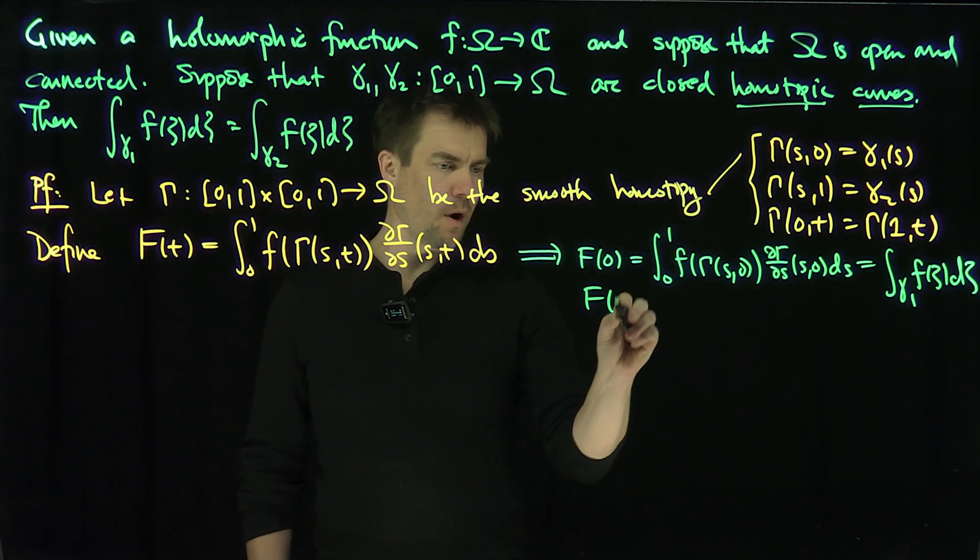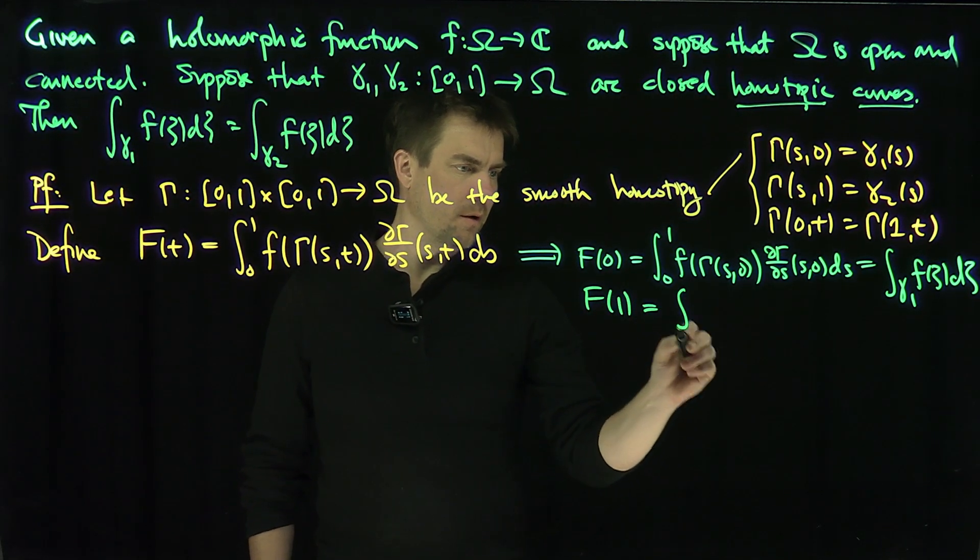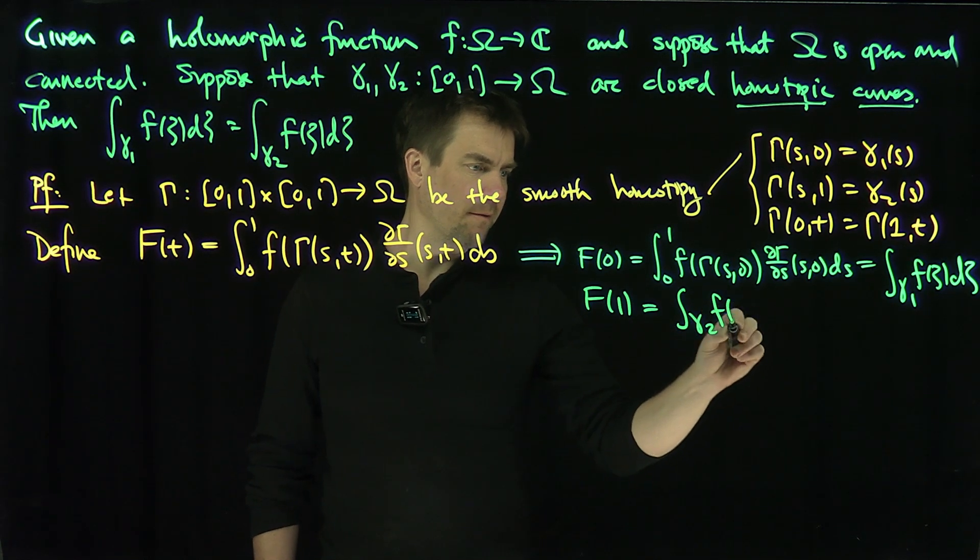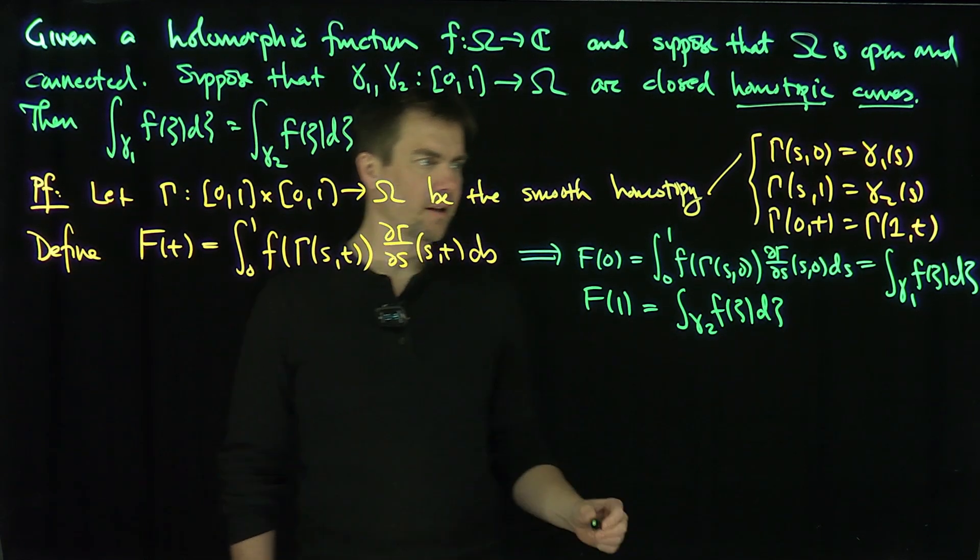And then similarly, F of 1 is equal to the integral over gamma2 of F of zeta d zeta. Beautiful.